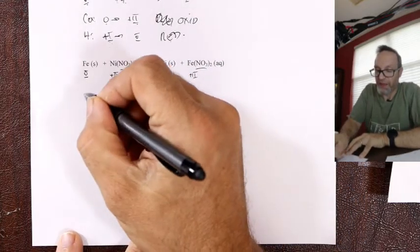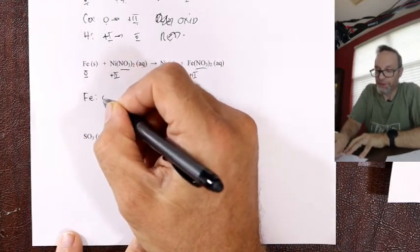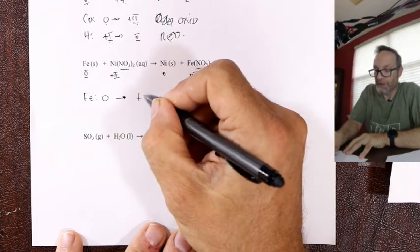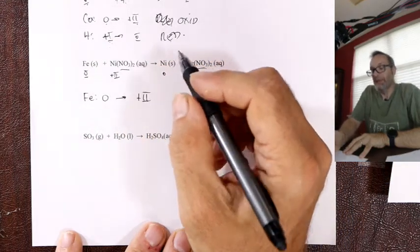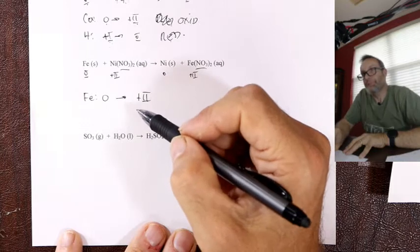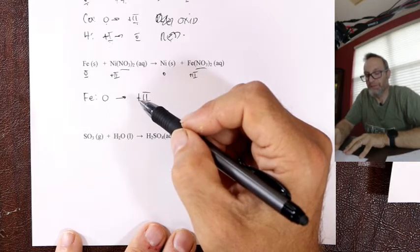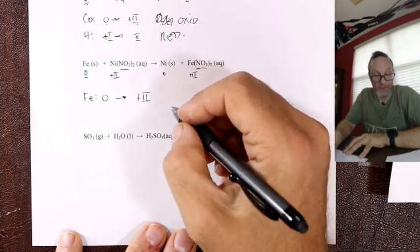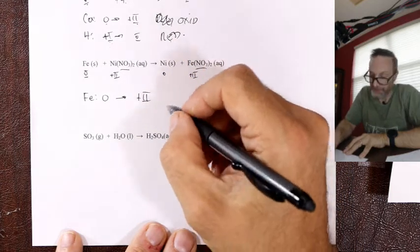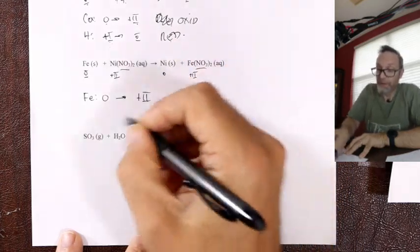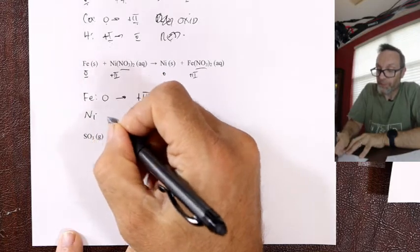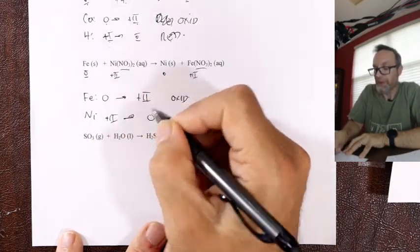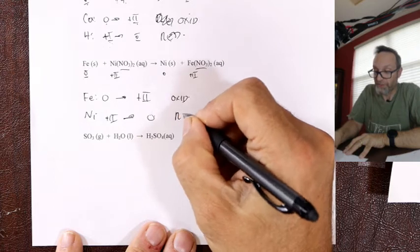Iron went from zero to plus two — it went plus, it lost minuses — oxidation. Nickel went from plus two to zero — it became more negative. Reduction is gain.